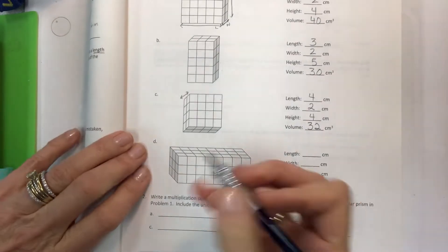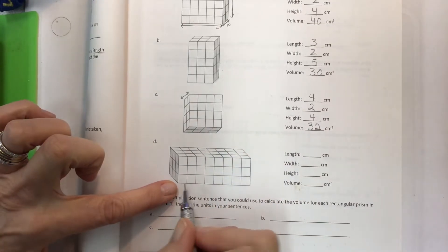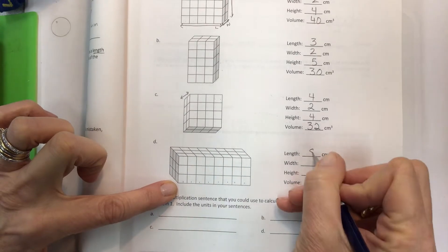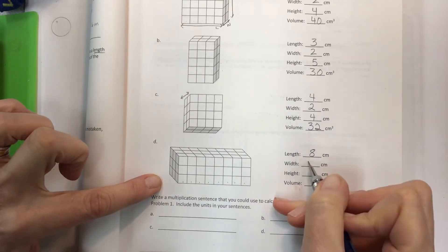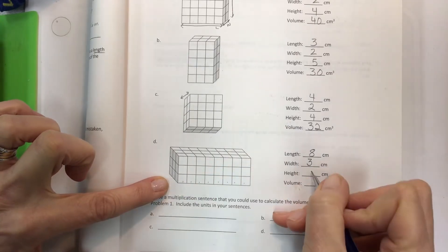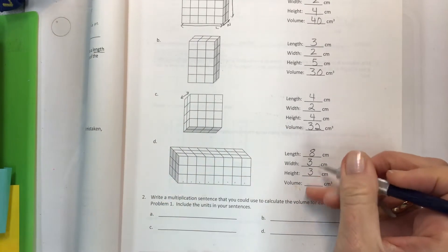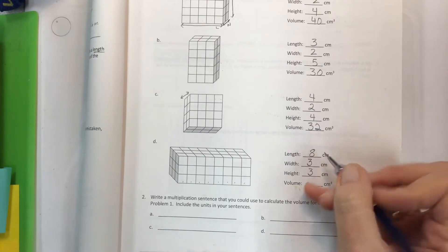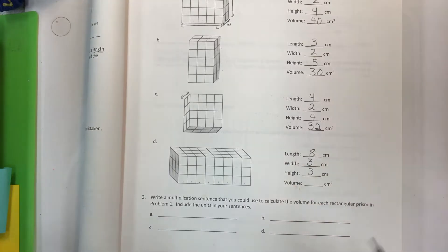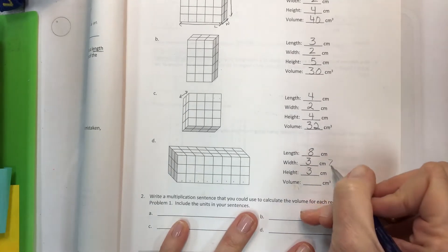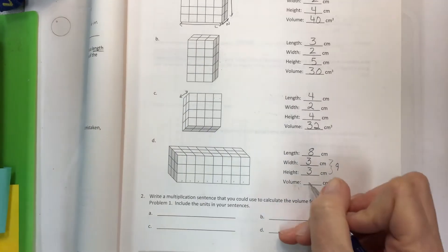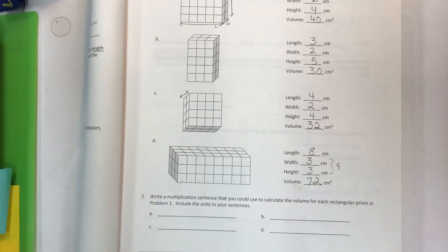And then for this big guy we've got a long length, so just come down and count if you didn't already. 1 2 3 4 5 6 7 8. Width going backward is 3. Hopefully you saw all 3. And height is 3. And so right here you can choose to multiply in any order. Now if I had 8 times 3 is 24 and 24 times 3 I might not know that off the top of my head, but I certainly do know that 3 times 3 is 9 and I know my 9's. 9 times 8 is 72. So make it easy for you to solve these.